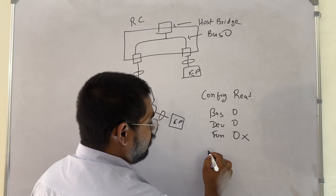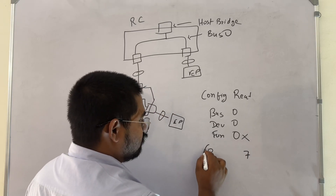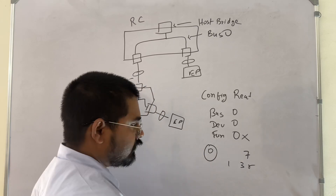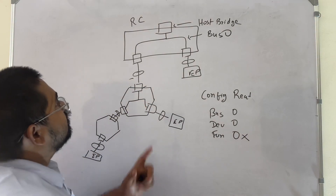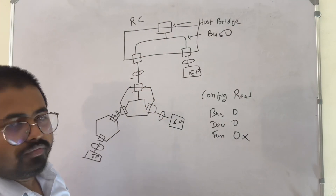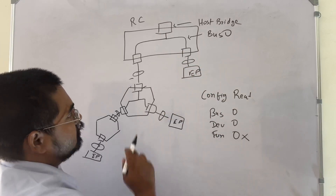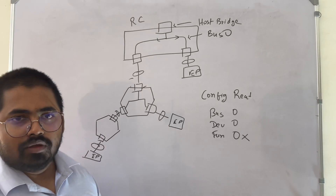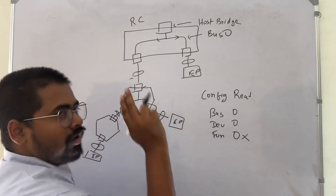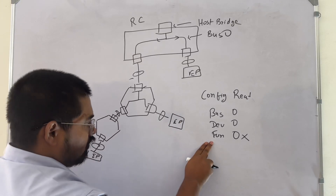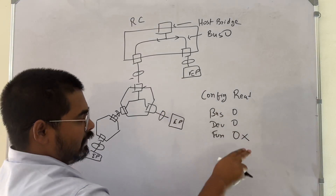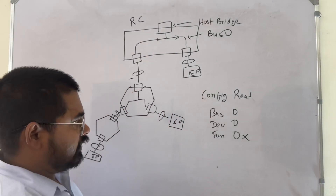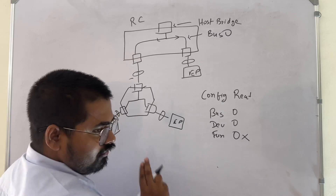A device can have functions 0 to 7, but function 0 is mandatory. Other functions — 1, 3, 5, or any — can be there, but 0 must always be present. So the host will initiate a config read TLP on bus 0, device 0, function 0. This packet on the bus can go to either of the root ports. The host will not know how many root ports there are, but it will send the config read and expect a response. Suppose one root port responds — yes, I am there, this is my vendor ID.